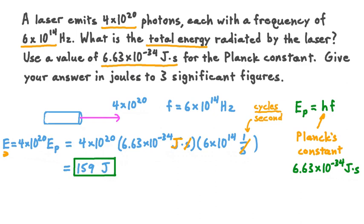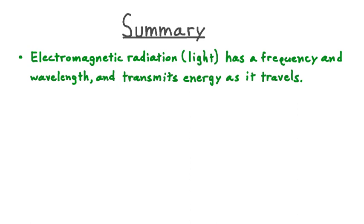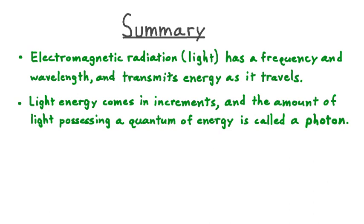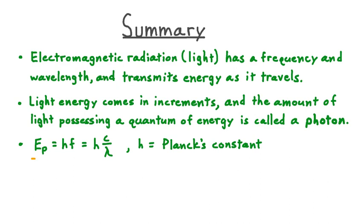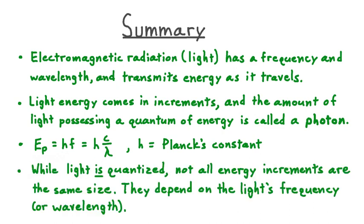Let's summarize what we've learned about the quantization of electromagnetic radiation. Electromagnetic radiation, also called light, has a frequency and wavelength, and this radiation also transmits energy as it travels. Light energy comes in increments, and the amount of light possessing a quantum of this energy is called a photon. The energy possessed by a single photon is equal to a constant H called Planck's constant — named after its developer Max Planck — multiplied by the frequency of the photon f. Equivalently, because wave frequency is equal to wave speed divided by wavelength, the energy of a photon moving at the speed of light is equal to Planck's constant times C divided by the wavelength lambda. Lastly, while light is quantized, not all the energy increments have the same size — the size depends on the light's frequency, or equivalently, its wavelength.